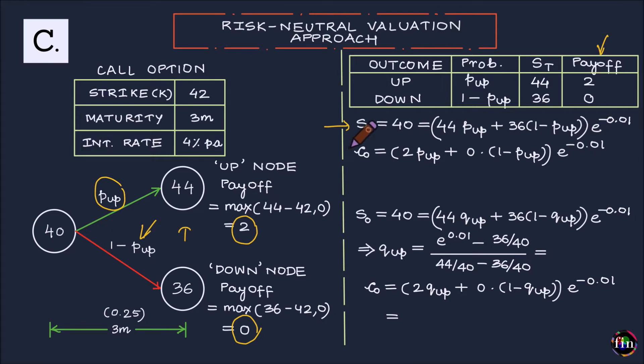then by implication, I can actually write a similar equation as this for my call option as well. That means, if I can defend this equation for the underlying asset, I can, by implication, write the same style equation for a contingent claim also which is written on top of this underlying asset.